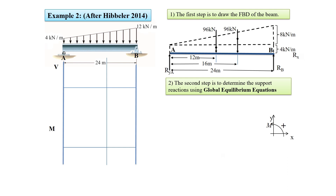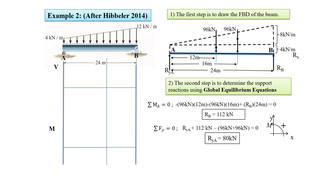Sum of all moments at point A must be zero, giving us the reaction force at point B: RB equals 112 kilonewtons. Sum of all forces in the Y direction must equal zero, giving us the reaction force at point A: RYA equals 80 kilonewtons. This value is the shear force at point A. Sum of all forces in the X direction must also be zero, therefore RXB equals zero. We start the shear diagram from point A with a shear force of positive 80 kilonewtons and finish at point B with a shear force of negative 112 kilonewtons.